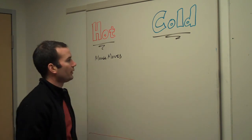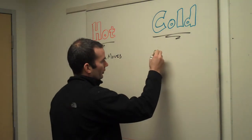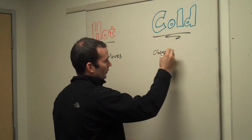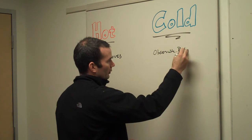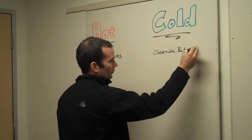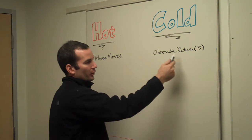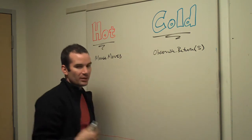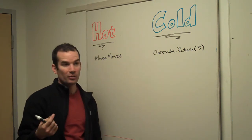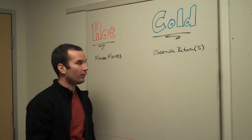An example of a cold observable would be Observable.return, where this doesn't actually run the code that creates the message on 'next' until the point at which I subscribe. And it happens for each time I subscribe as well.